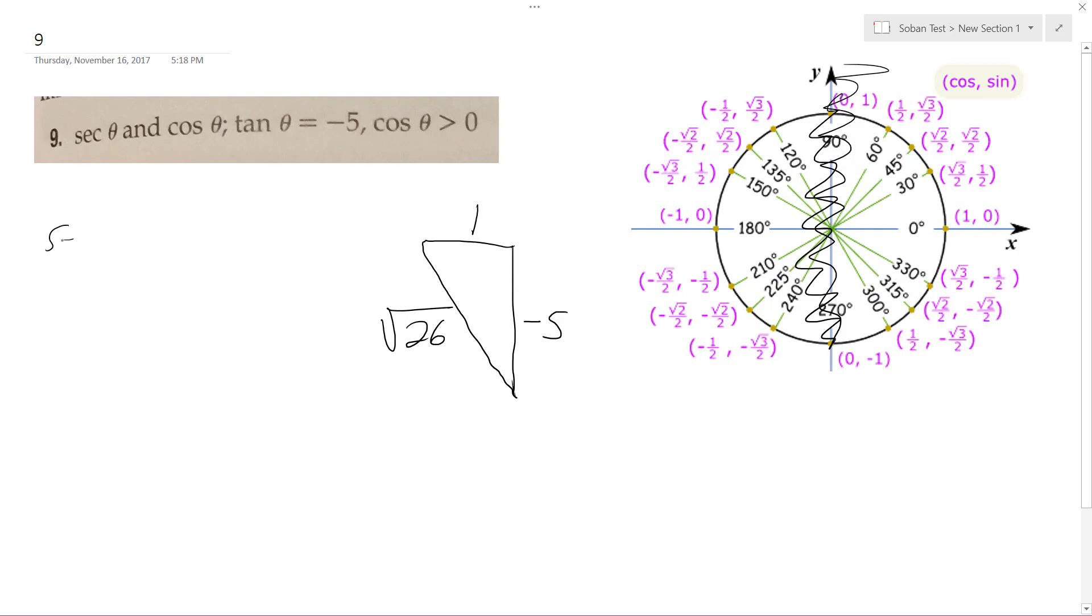So secant theta is equal to hypotenuse over... well, it's one over the cosine, hypotenuse over adjacent, which is equal to root 26 over one, or just root 26.